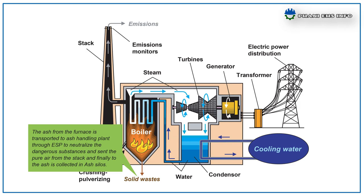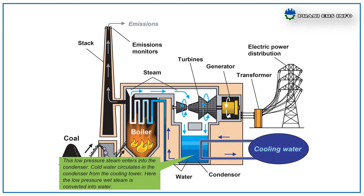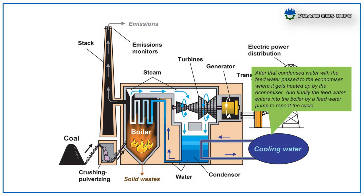Low-pressure steam enters into the condenser. Cold water circulates the condenser from the cooling tower. Low-pressure wet steam is converted into water. After that, condensed water with the feed water passes to the economizer where it gets heated up, and finally the feed water enters into the boiler by a feed water pump to repeat the cycle. This is the process of power generation.